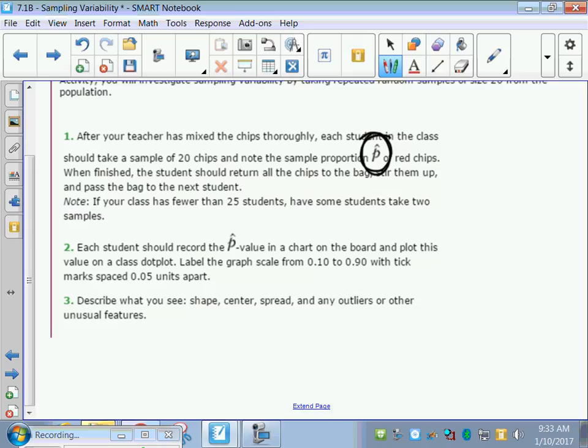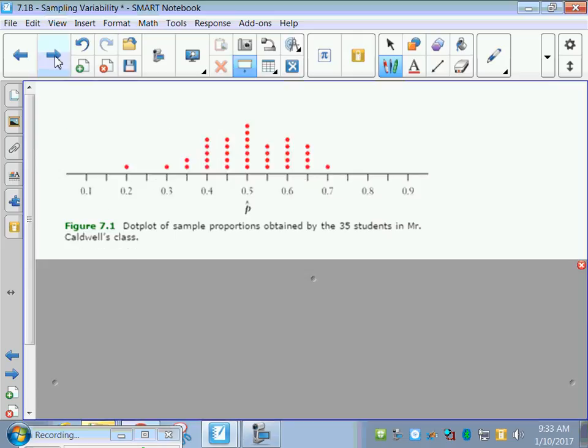Each student should record the P value in a chart on the board and plot the value in a class dot plot. Label the graph from 0.1 to 0.9. Describe what you see. Shape, center, spread, outliers. Lucky for us, someone else did this activity. So there's all the dots. They passed around the bag.